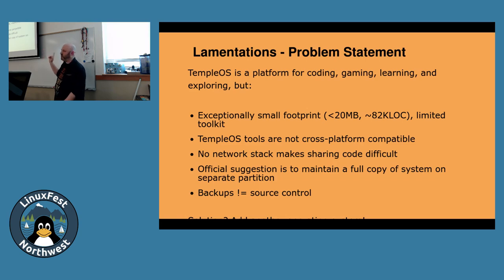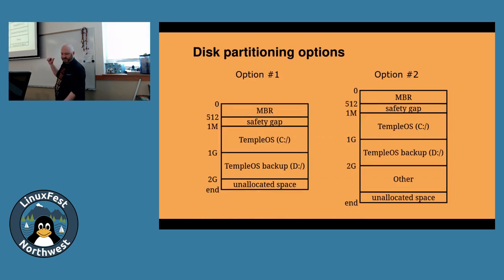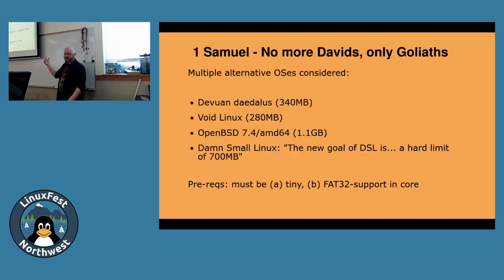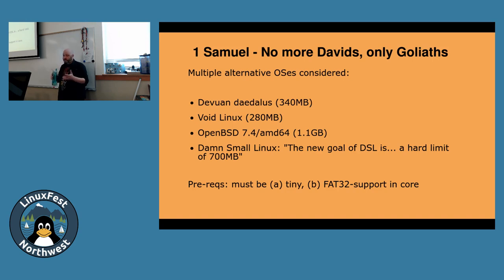So our solution is to add a new operating system, because we know how to dual boot. Terry's suggestion is to have a Temple OS C drive and a Temple OS backup and move things that way. But we can just have an additional partition and put whatever we want on it. I tried the Dev1 project — the smallest install I could get for Dev1 was 340 megabytes, which is significantly larger than 20 megabytes. I tried a really cool rolling release distro called Void Linux, and I tried a recent OpenBSD — it's over a gigabyte now.